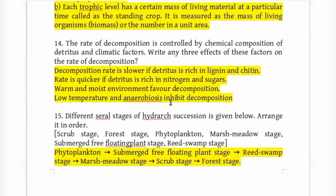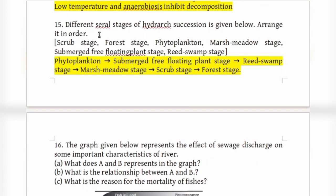In hydrarch succession, the serial stages arranged in order are: phytoplankton stage → submerged free-floating plant stage → reed swamp stage → marsh meadow stage → scrub stage → forest stage. The first stage is phytoplankton and the last is the forest stage (climax community).